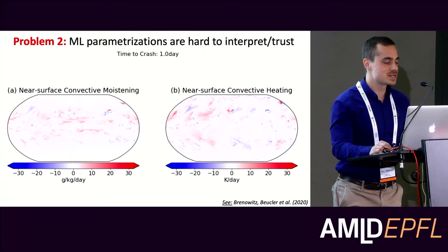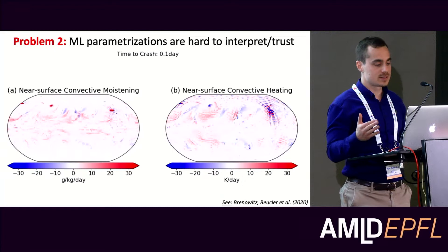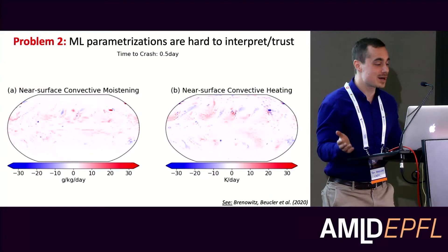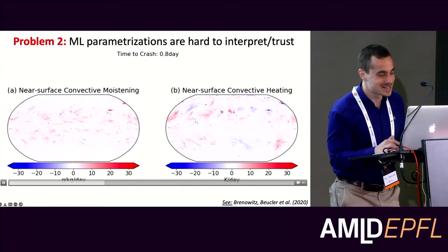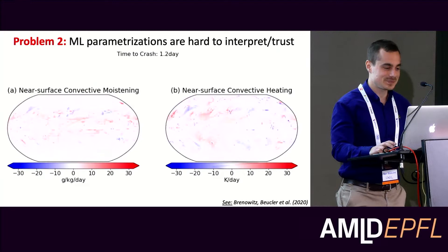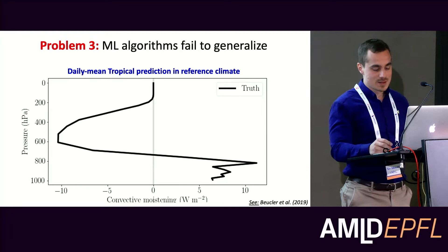Second, interpretability. Because neural networks are hard to interpret, they're hard to trust. I'm showing a neural network that's not performing well and is coupled back to a climate model, leading to a really dramatic instability — you can actually watch the climate model crashing, with very dramatic internal gravity waves being emitted before it completely crashes. Why would you trust a model if you don't even know beforehand whether it's going to be stable when you couple it back to the climate model you use for predictions?